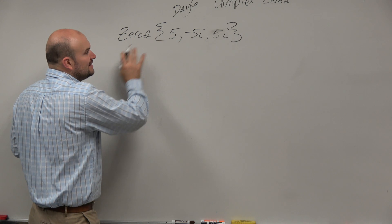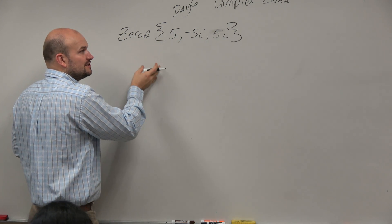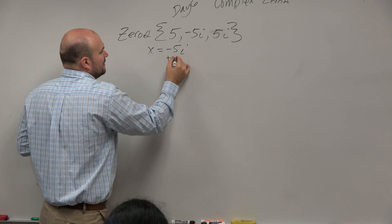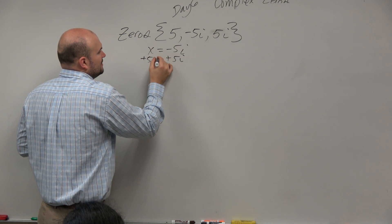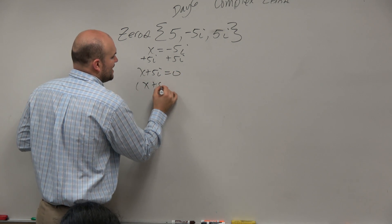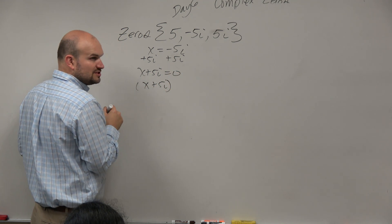So if you want to find the zeros or the factors, yes, you can do the slow method. x equals negative 5i. Add 5i to the other side. x plus 5i equals 0. So x plus 5i is a factor.